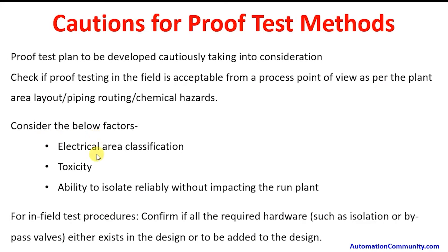Consider factors such as electrical area classification, toxicity, and the ability to isolate reliably without impacting the running plant. The running plant shall not be disturbed for proof testing requirements, and this must be kept in mind. For in-field test procedures, confirm if all required hardware such as isolation or bypass valves either exists in the design or needs to be added. If there is no bypass available, an alternate method must be developed before performing the proof testing.